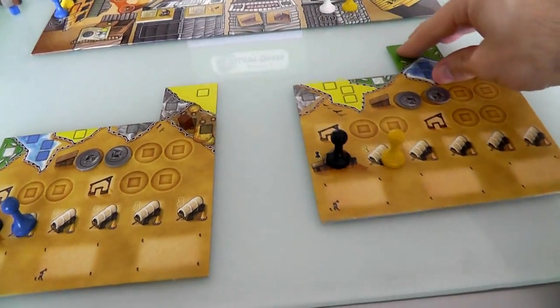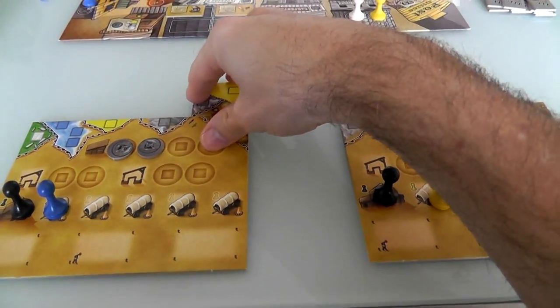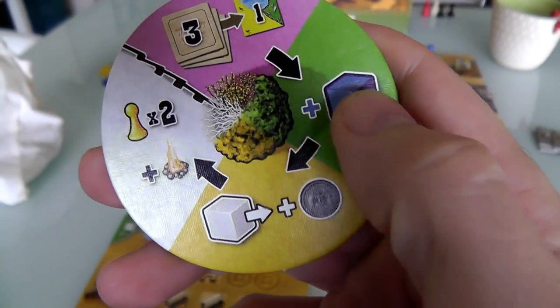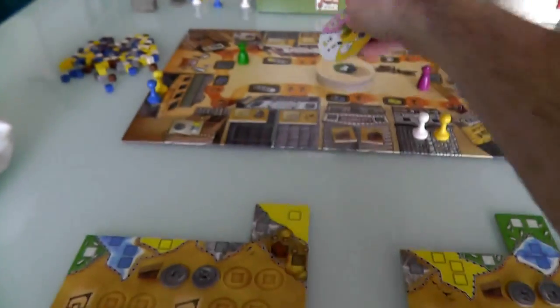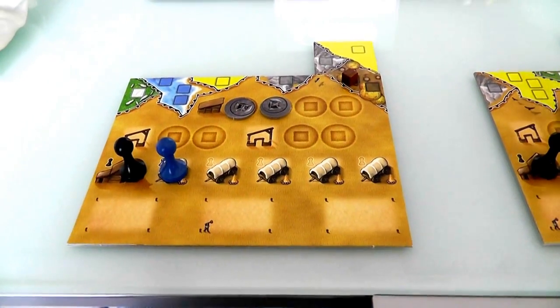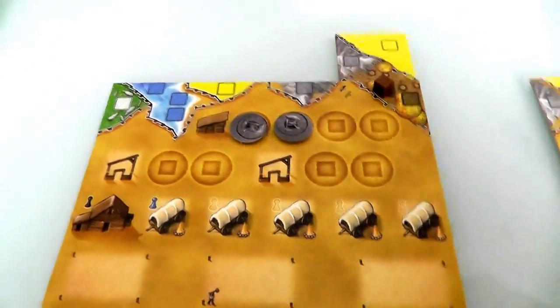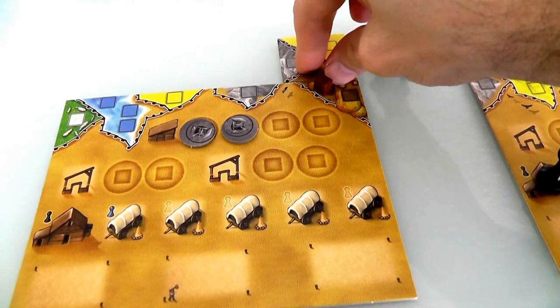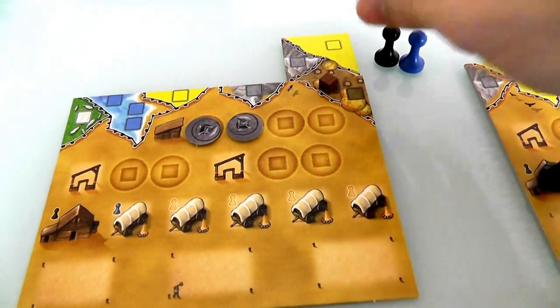Now the rest of the tiles, they go back in the bag. We are done with spring. We drew three, we kept one. And now we move on to summer where we're going to harvest. Remember, this summer, there's going to be extra blue if you try to harvest blue.